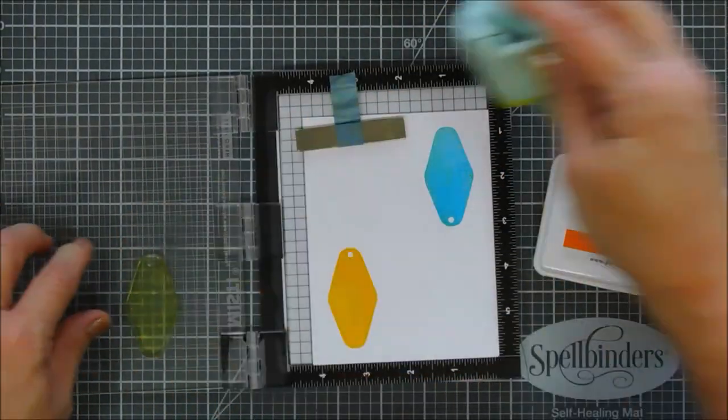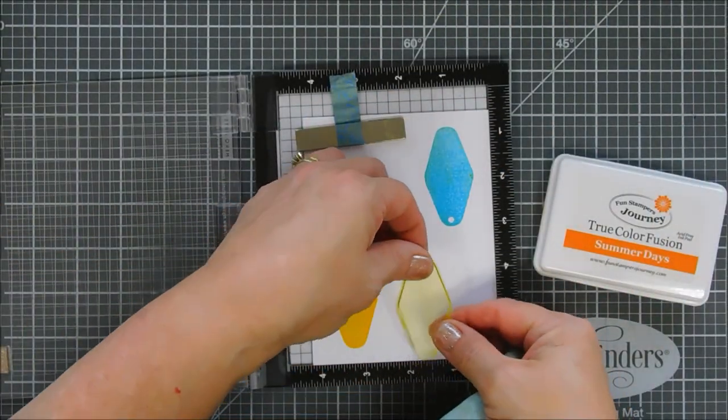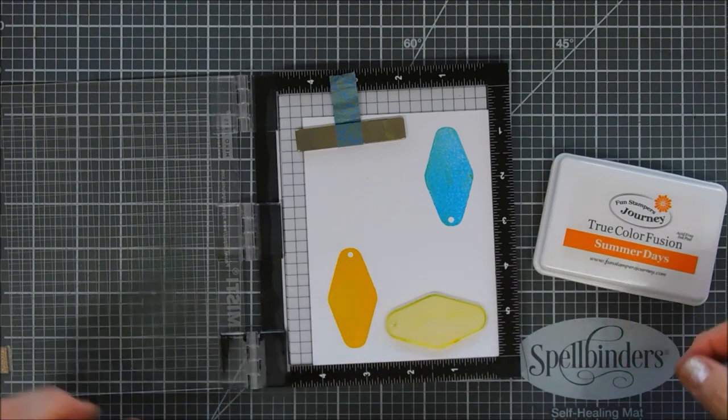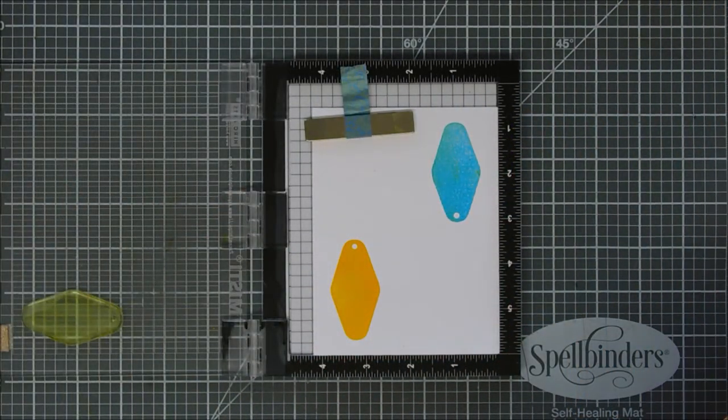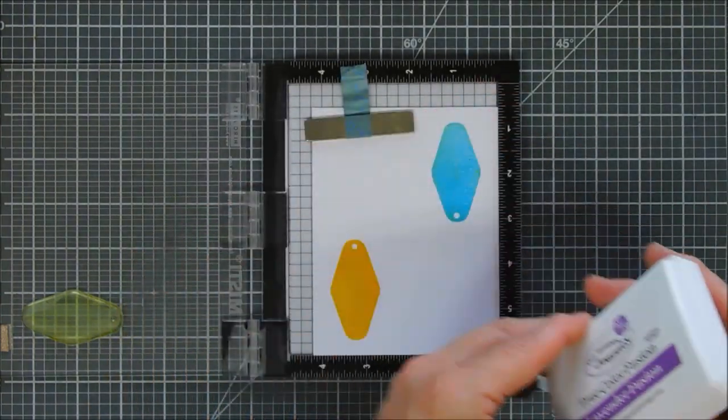Anyway we are going to do our yellow. Yellow is with summer days and then our third color we are going to ink it up with our lavender fusion ink. Yes I chose some nice bright colors.